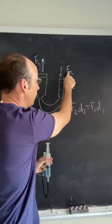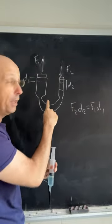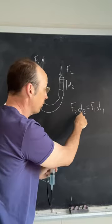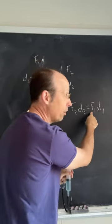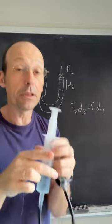But the product of F and D is going to be the same for both of them. So I can apply a small force over a large distance and get a large force over a short distance. That's exactly what simple machines do.